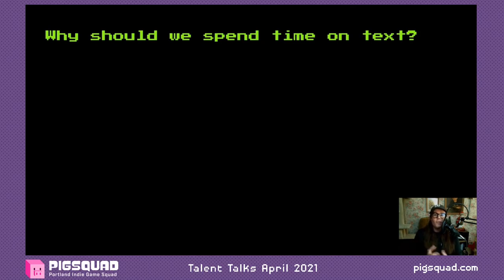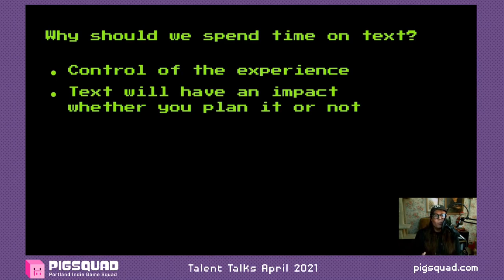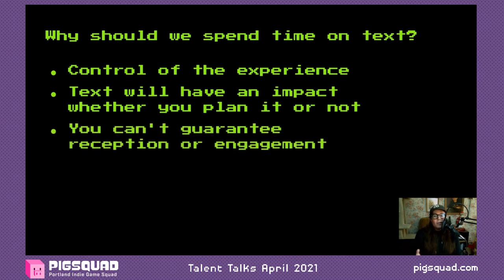Why should we spend time on text? It does a lot of stuff for you, and you want to spend time on it for the same reason you spend time on any part of your game — it allows you control of the player's experience. If you're using first drafts and not thinking about what the text is doing, you're losing that control. The text is going to have an impact on the player whether you plan it or not, so you should plan it. Players can skip text, just like they can mute the game — but that doesn't mean you don't focus on it.